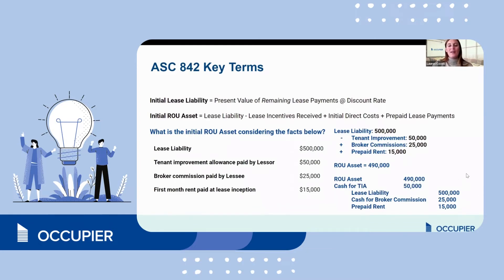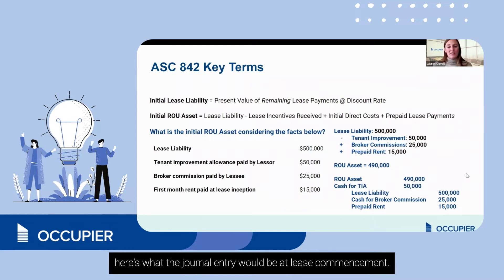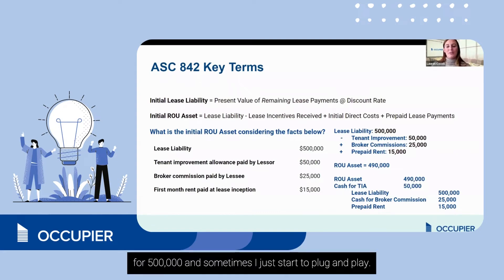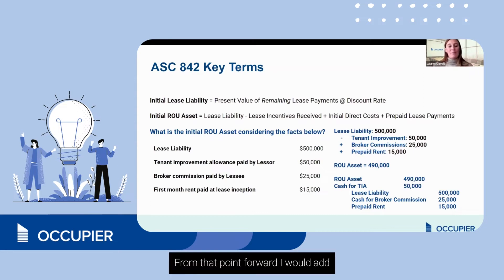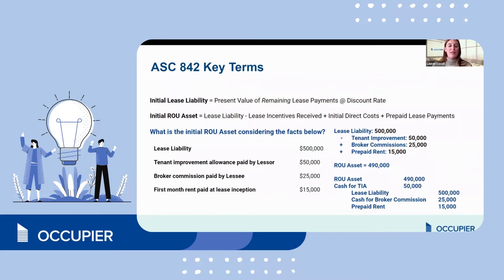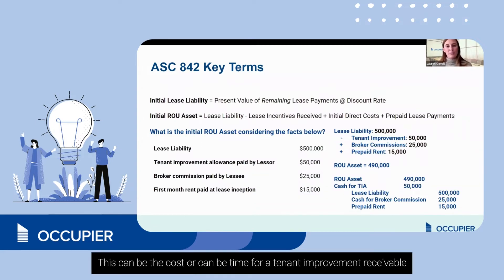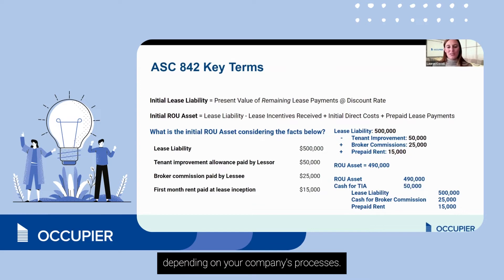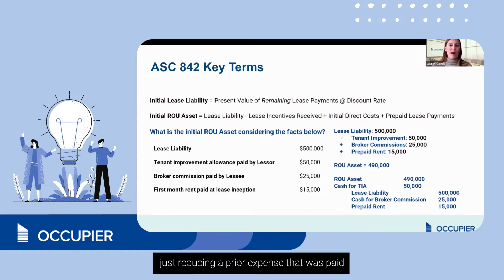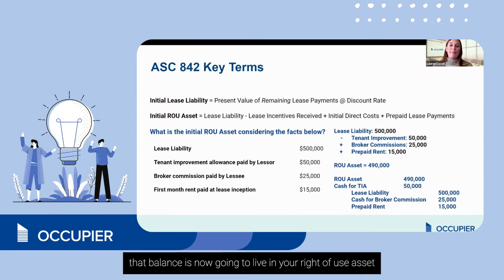In the bottom right-hand corner, here's the journal entry at lease commencement. Debit the right-of-use asset for $490,000 and credit the lease liability for $500,000. Then add cash for the tenant improvement allowance of $50,000 — this could be cash or a tenant improvement receivable depending on your company's processes. Cash for broker commissions could also be cash or a reduction of a prior expense. Finally, reduce prepaid rent, since that balance is now living in your right-of-use asset.